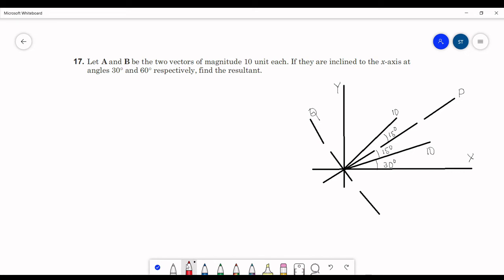In this question we are given the vectors A and B, each having magnitude 10. They are inclined to the x-axis at angles 30 degrees and 60 degrees respectively. Find the resultant.